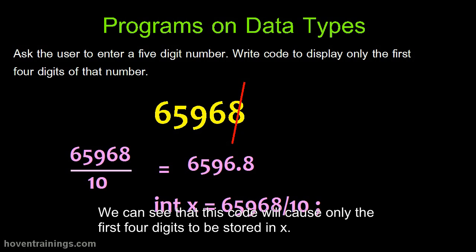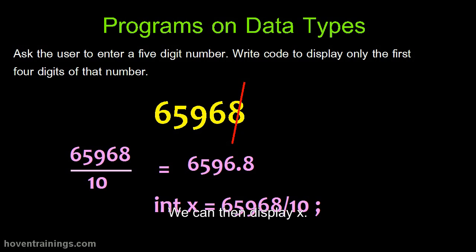We can see that this code will cause only the first four digits to be stored in X. We can then display X.